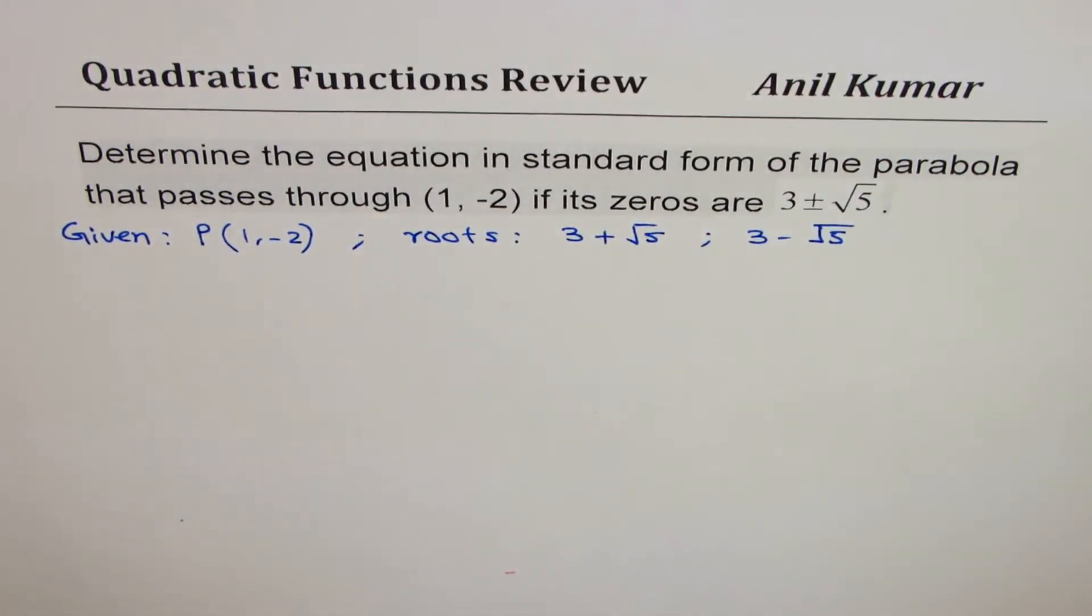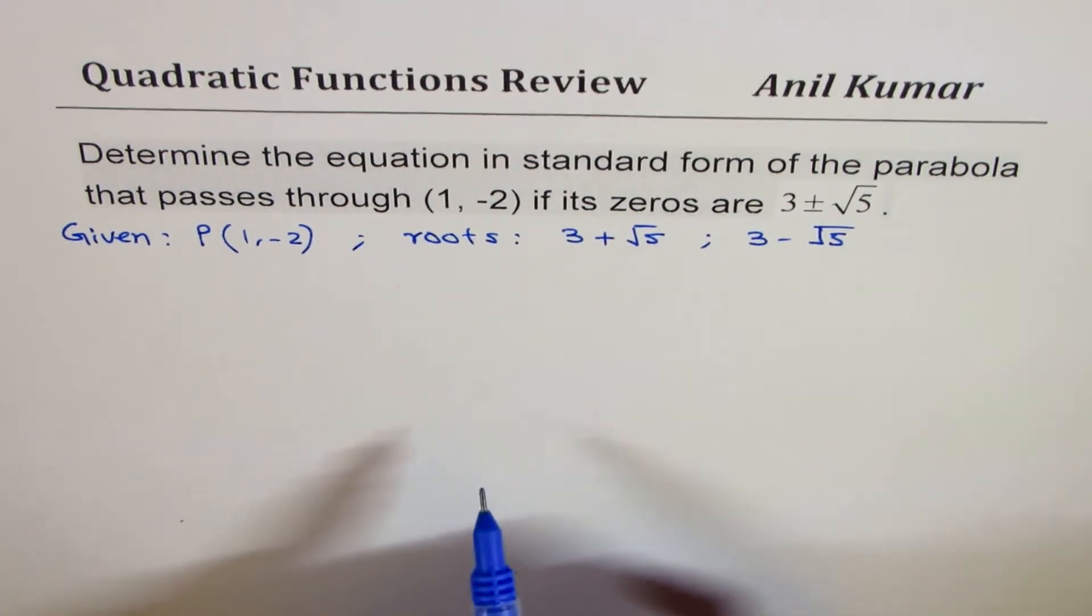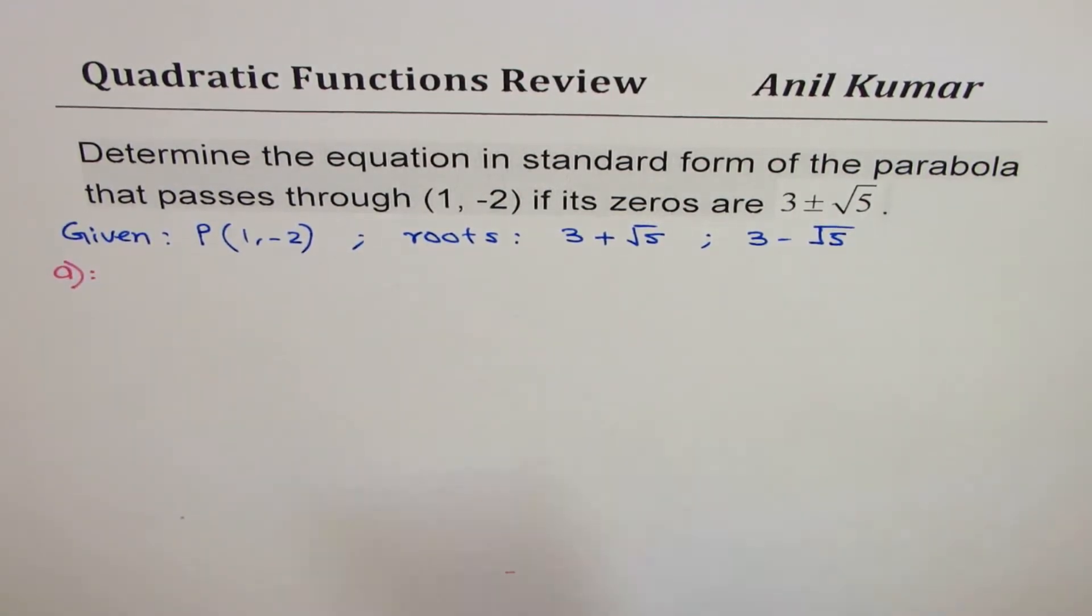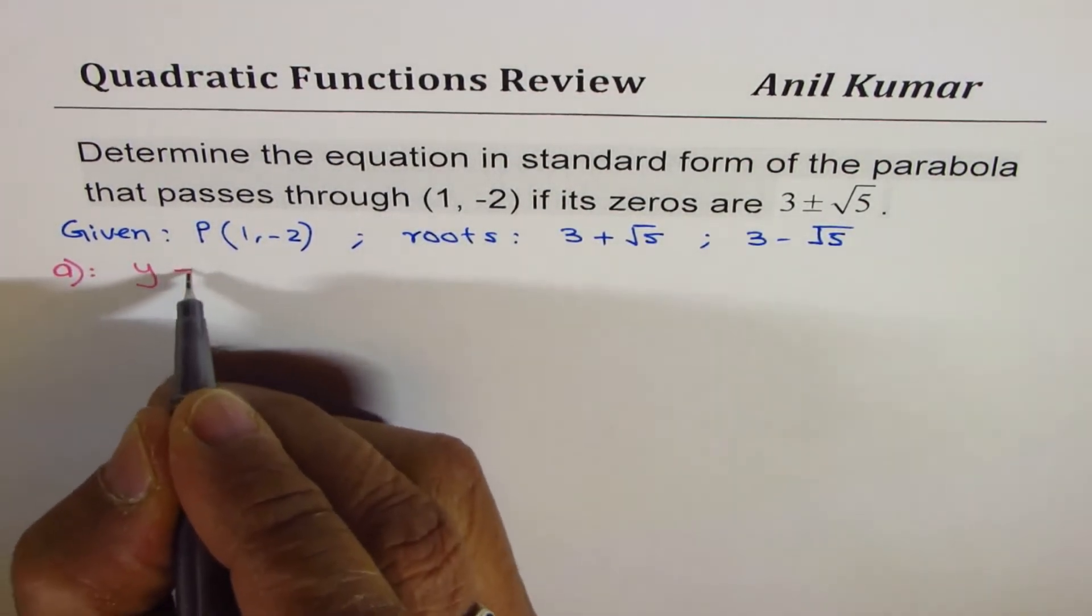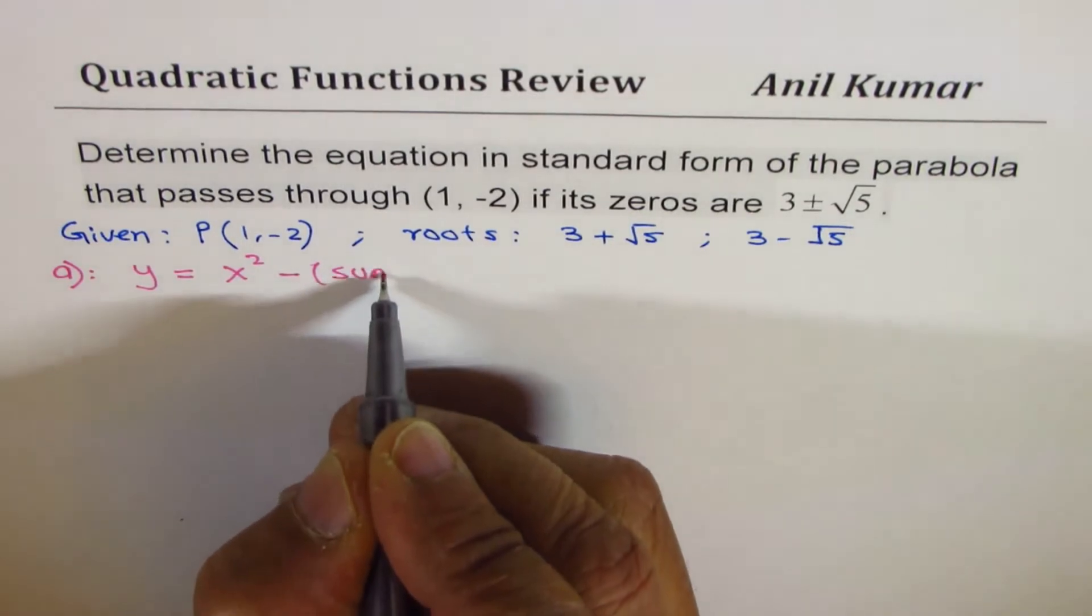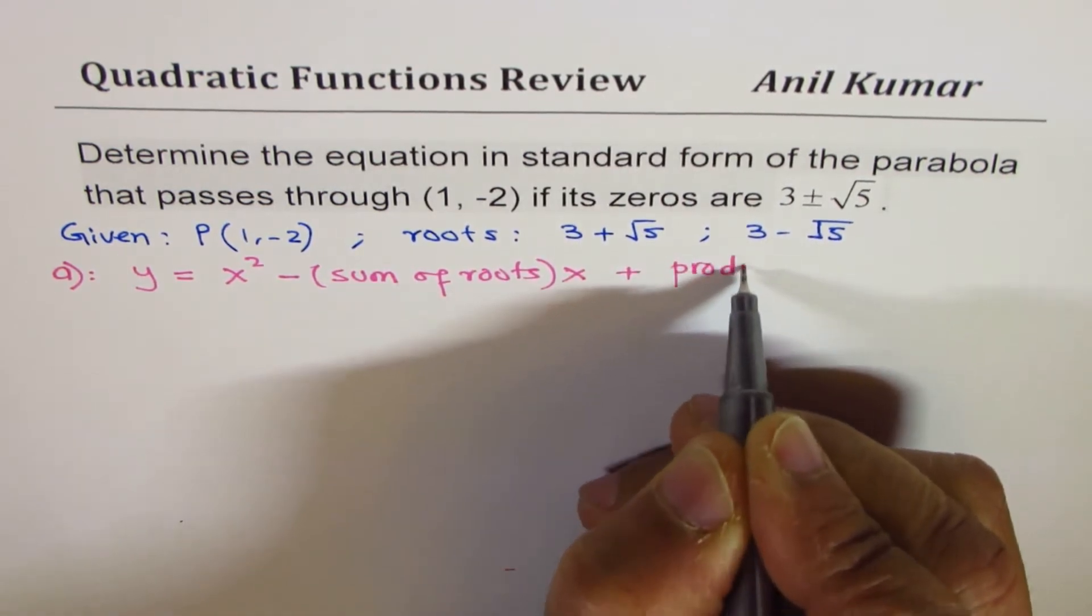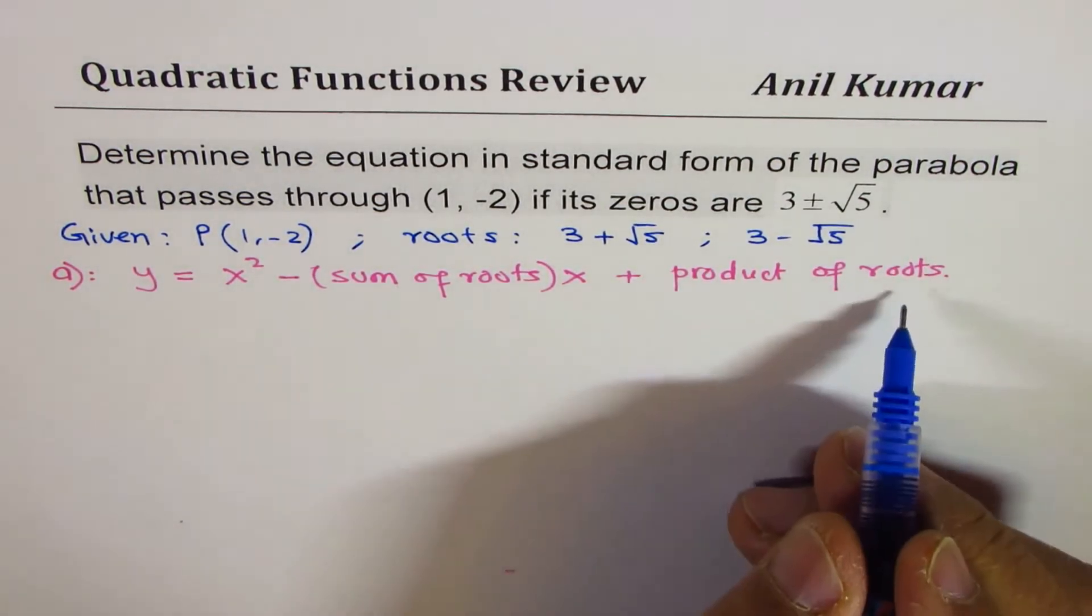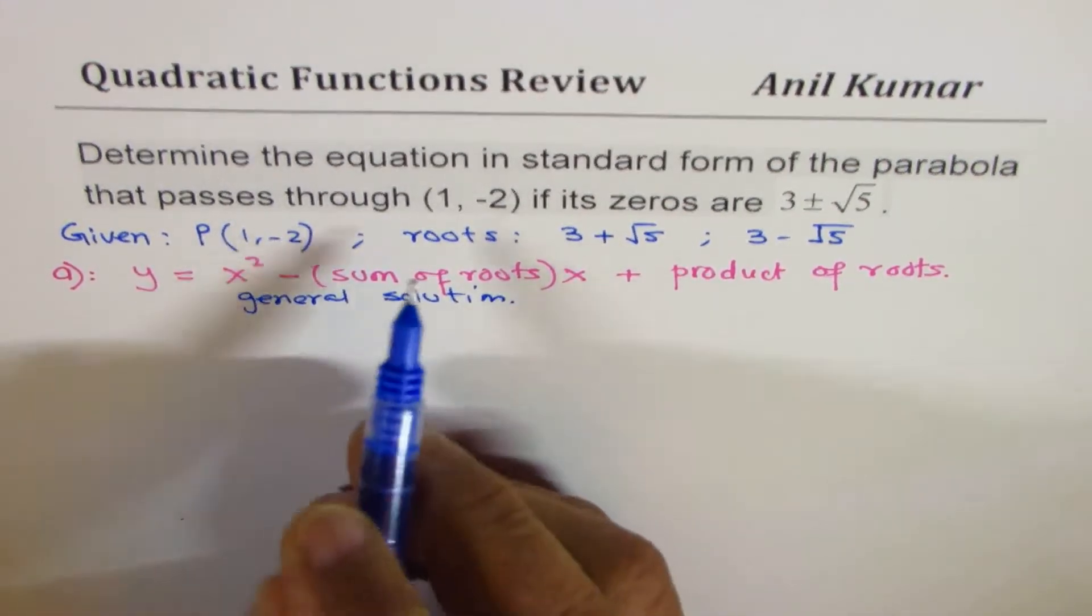As we have discussed earlier, there are many methods of solving this particular question. Method A could be: since we want to write it in standard form, y = x² - (sum of roots)x + product of roots. This is the most efficient method to get a general solution.